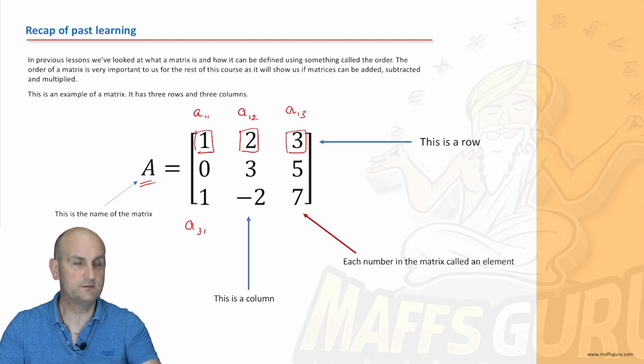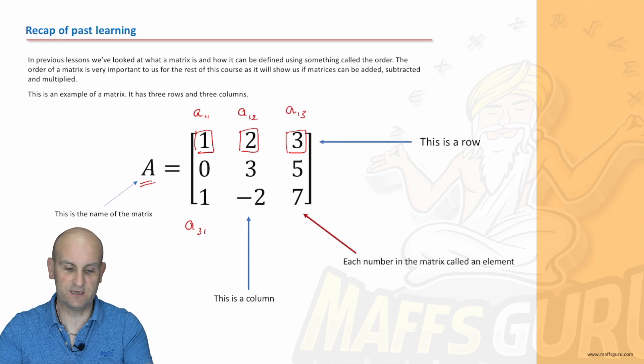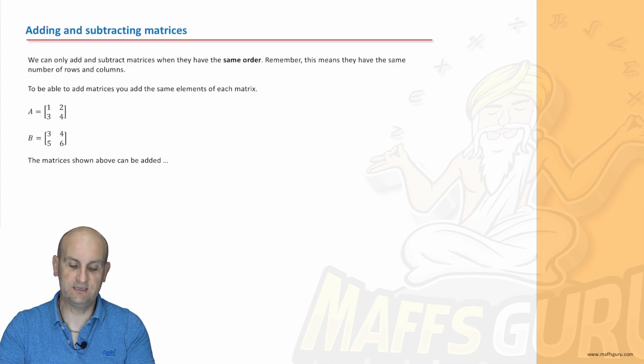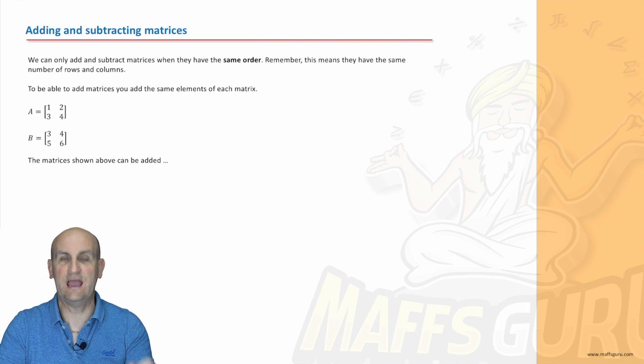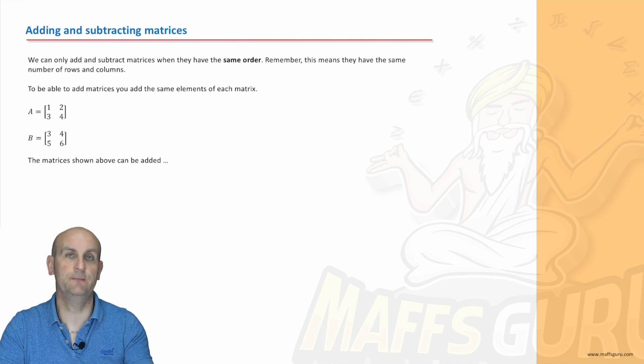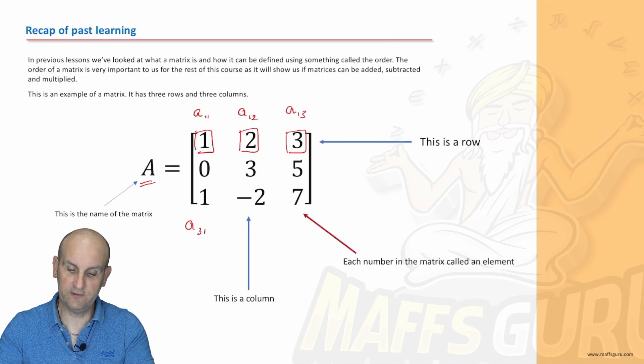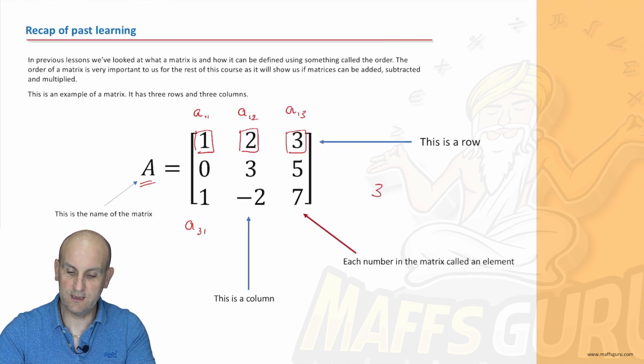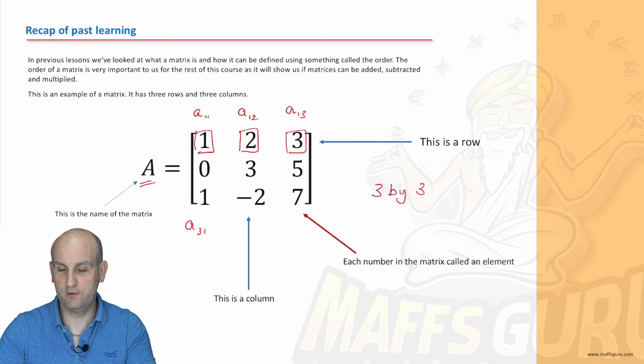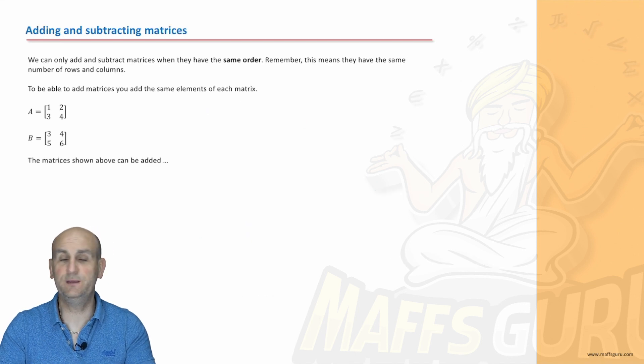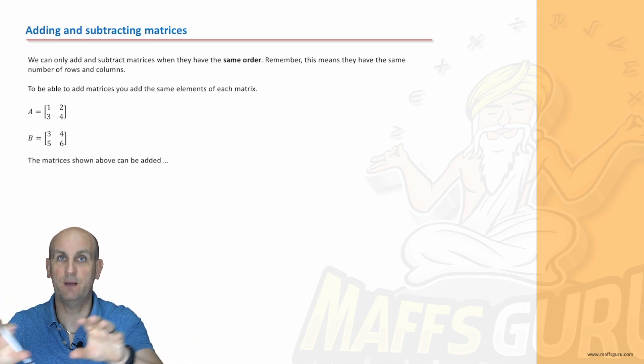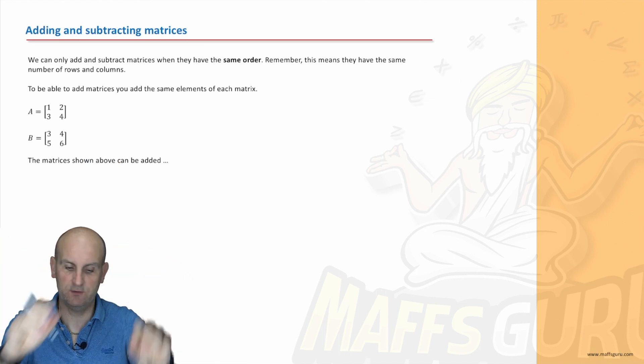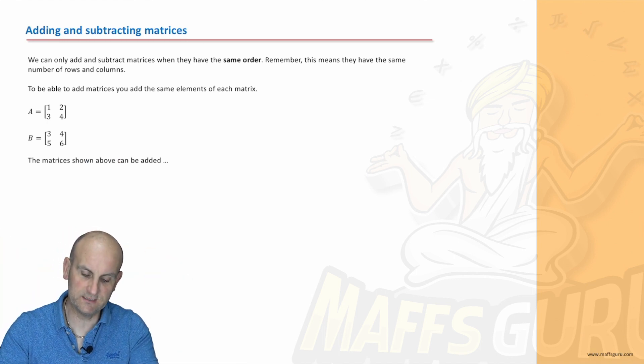Adding and subtracting matrices: when you add and subtract a matrix they have to be exactly the same order. Do you remember what I mean by order? This would be a three by three. The reason they have to be the same order is because you can only add matrices if elements match up, and then you add each of those elements.